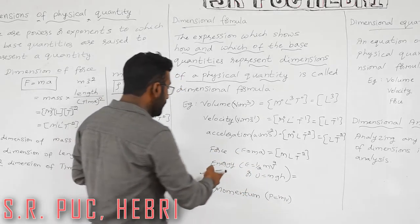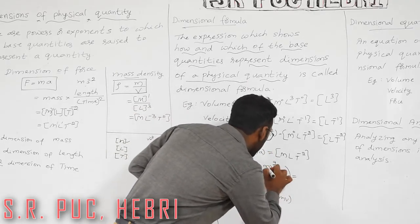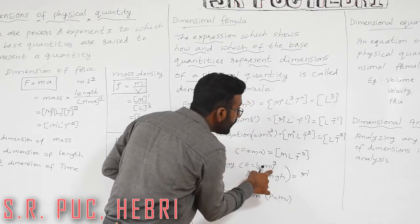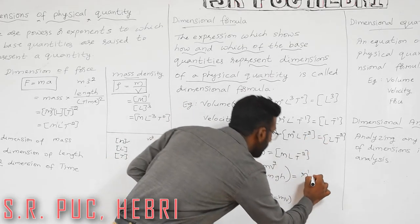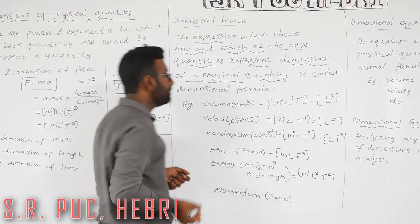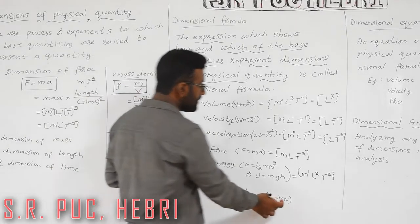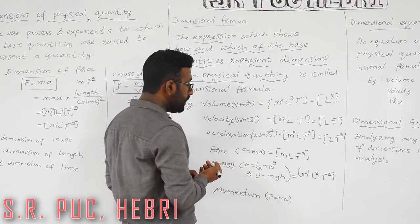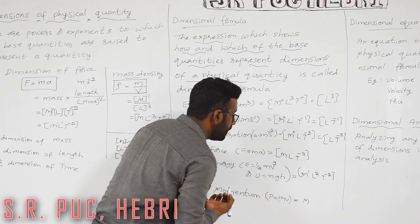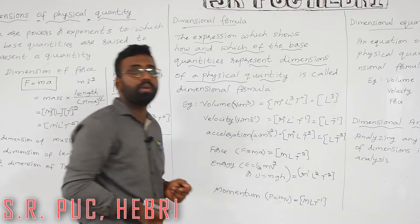For energy E = ½mv², we write M to the power 1, then square of velocity: we already have velocity as L T⁻¹, so velocity squared gives L² T⁻². The dimensional formula of energy is M L² T⁻². For momentum, p = mv: mass is M, velocity is L T⁻¹, so momentum is M L T⁻¹.